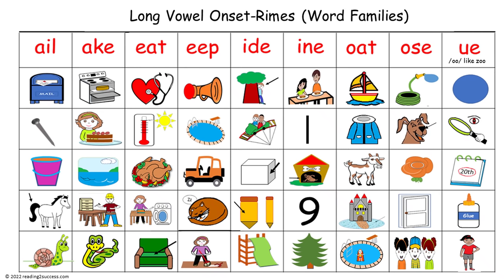Parents, welcome to How to Teach Kids Long Vowel Onset and Rhymes, also called word families. We're going to look at the long A word families, long E word families, long I word families, long O word families, and a long U word family.